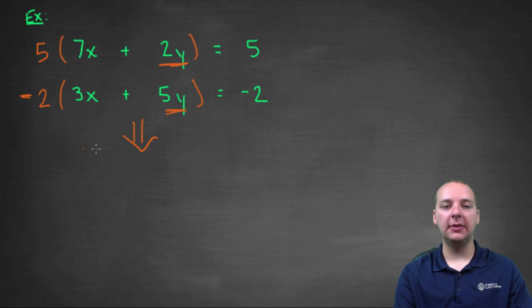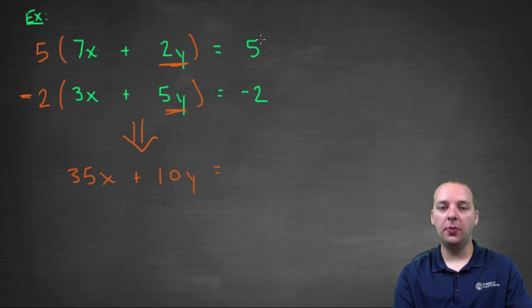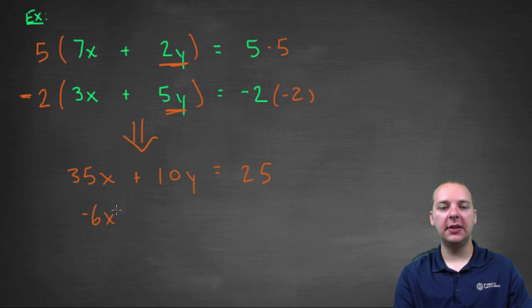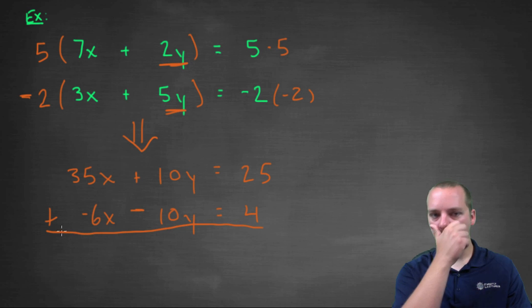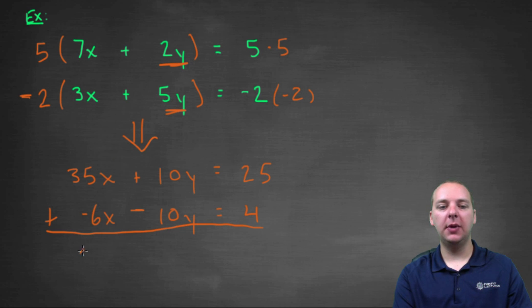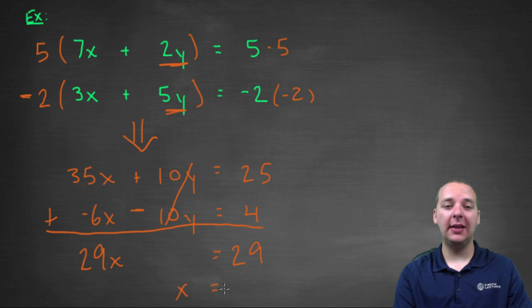Rewriting both equations: the top becomes thirty-five x plus ten y equals twenty-five (multiplied by five), and the bottom becomes negative six x minus ten y equals positive four (multiplied by negative two). We have exactly what we want: ten y and negative ten y. Drawing a line and adding: thirty-five x plus negative six x makes twenty-nine x; the y's are eliminated; and twenty-five plus four equals twenty-nine. So twenty-nine x equals twenty-nine.